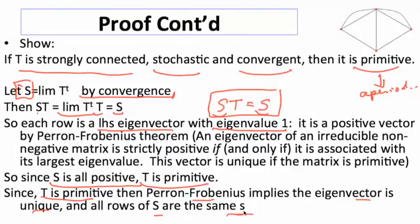then the Perron-Frobenius theorem tells us the eigenvector is unique, and so all rows of S are exactly the same S, which was the S that we were working with before, which is the left-hand side unit eigenvector. So Perron-Frobenius tells us that we basically get a unique eigenvector, and in this case we're getting the one with the largest eigenvalue of one.